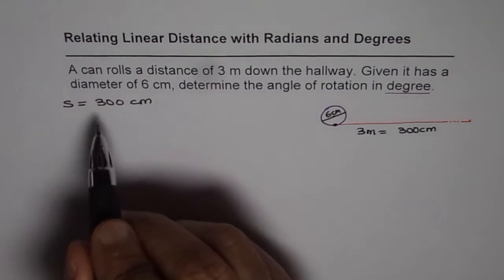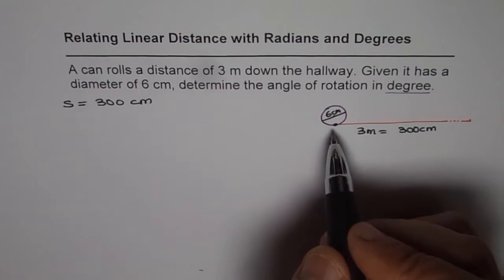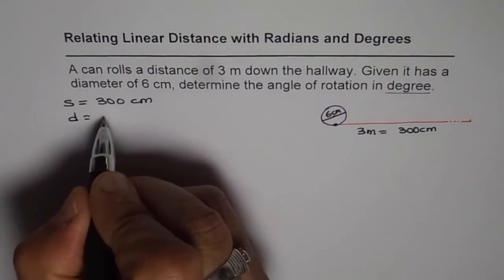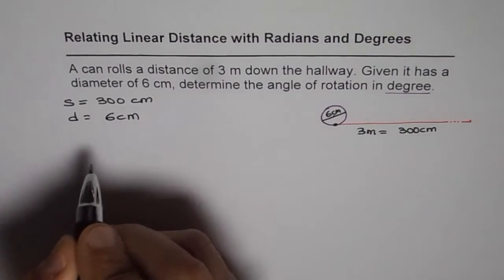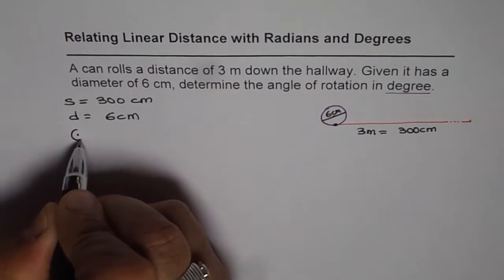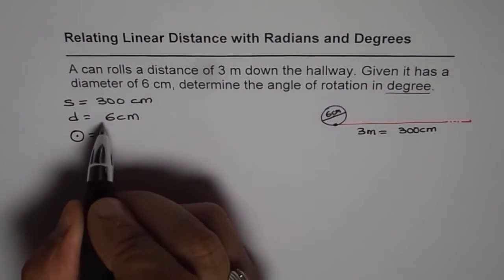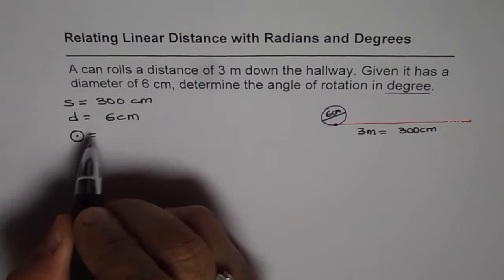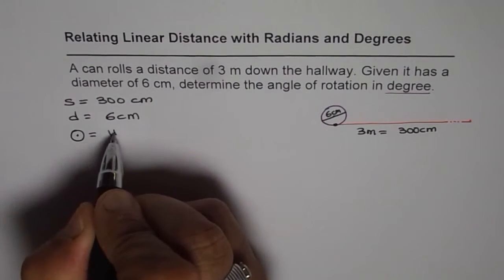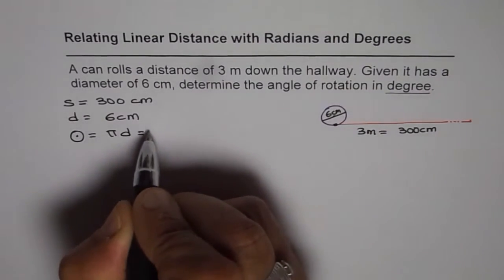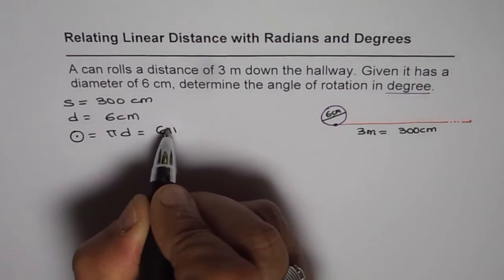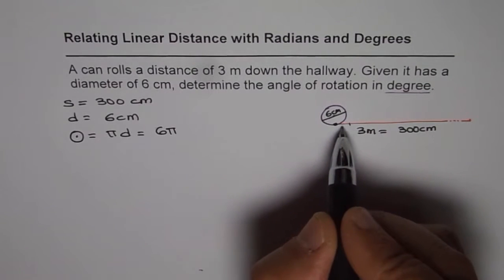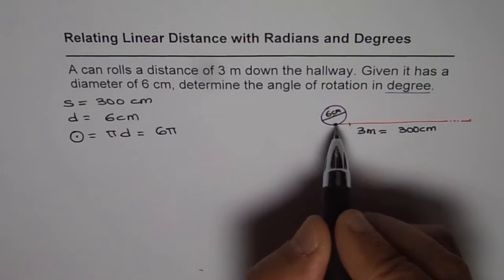Now, how is this related to the number of rotations? The diameter of the can is 6 centimeters, which means one full rotation moves the can a distance equal to its circumference — that is π times d, or 6π centimeters. So 6π is the distance covered in one rotation.